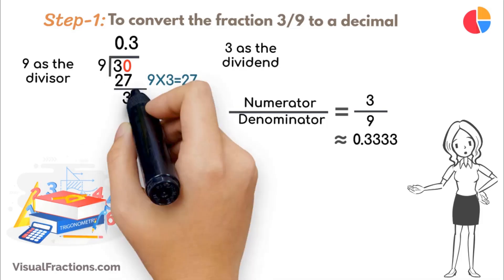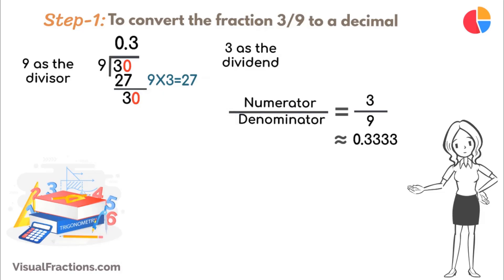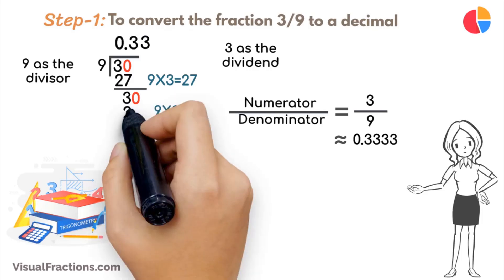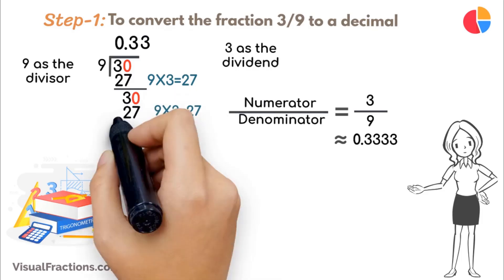Next, bring down another 0 to make it 30 again. 9 goes into 3, 3 times, updating the quotient to 0.33. Multiply 9 by 3 to get 27, and subtract this from 30, leaving a remainder of 3.